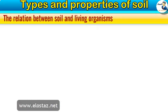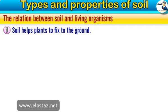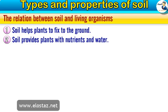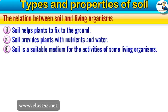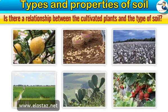The relation between soil and living organisms. Number one, soil helps plants to fix to the ground. Number two, soil provides plants with nutrients and water. Number three, soil is a suitable medium for the activities of some living organisms. After studying the types of soil, is there a relationship between the cultivated plants and the type of soil? To answer this question, let's study the soil and plants.